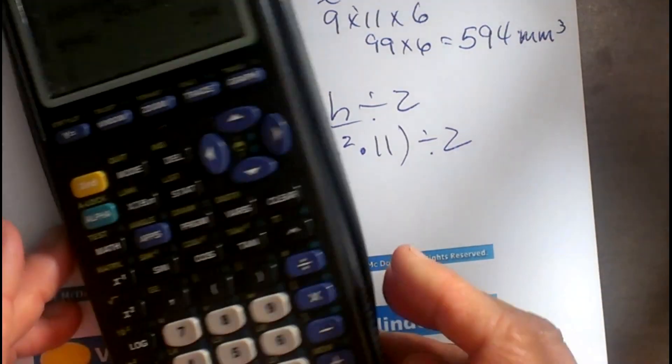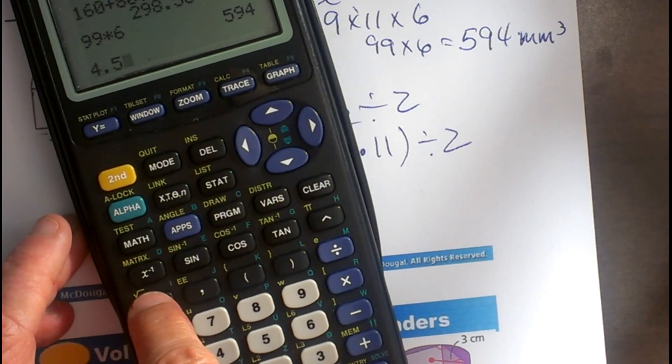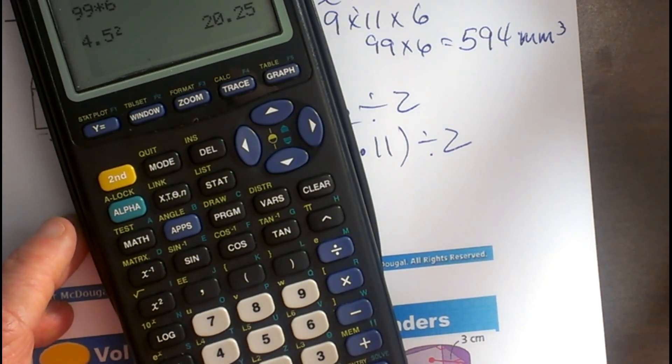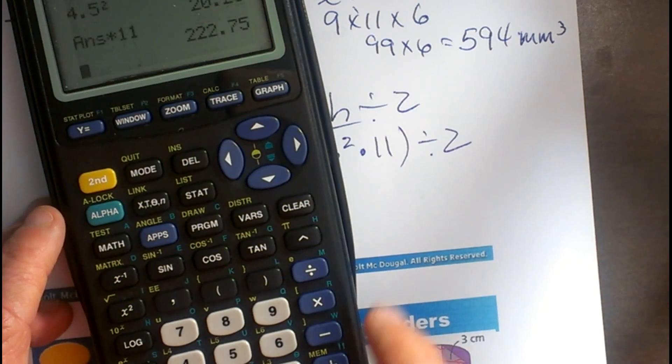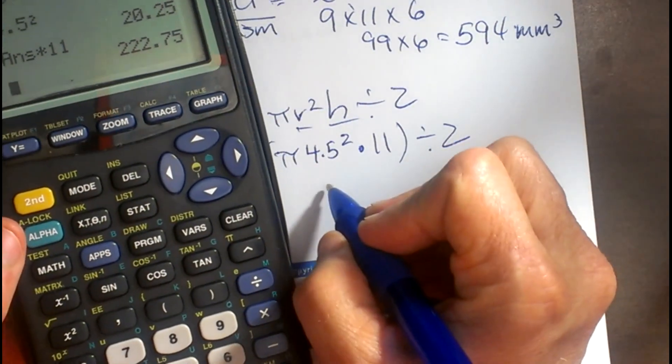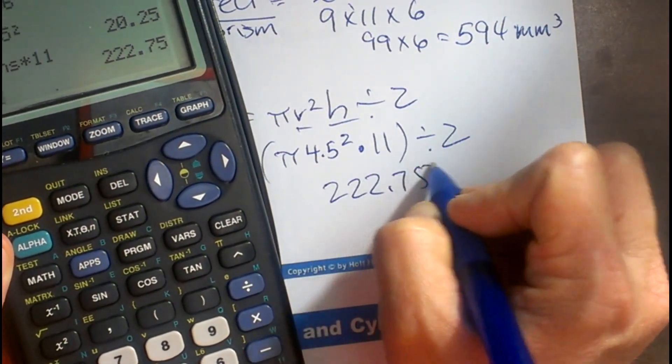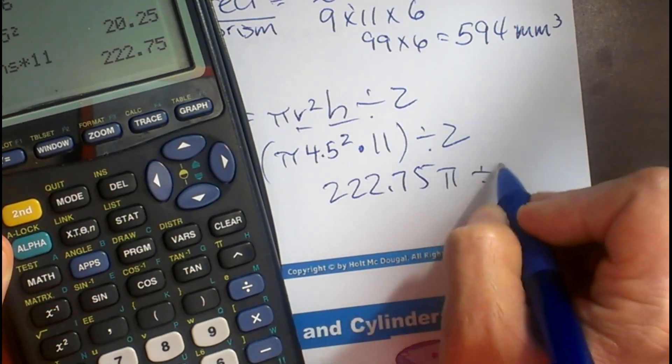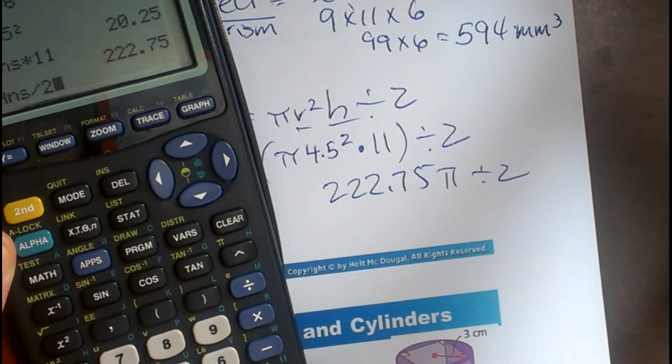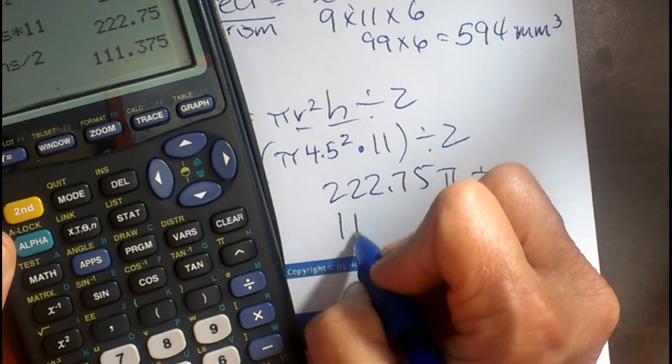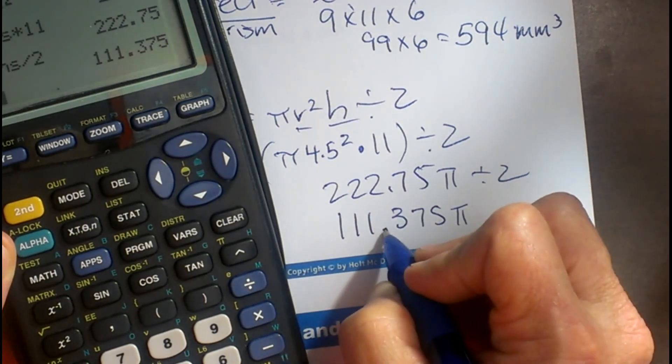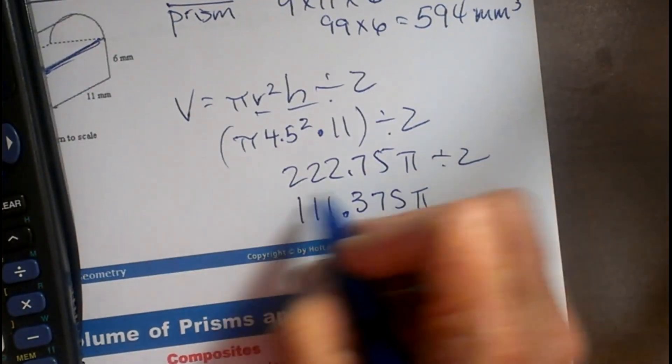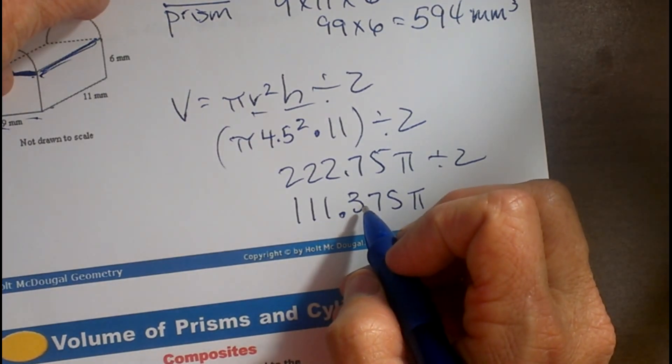So let's crank this out. 4.5 squared, that's going to give me 20.25 times 11. That's going to give me 222.75 pi divided by 2. So let's just divide that coefficient by 2. And that's 111.375, and I still have my pi in there. So that is the volume of that cylinder part.